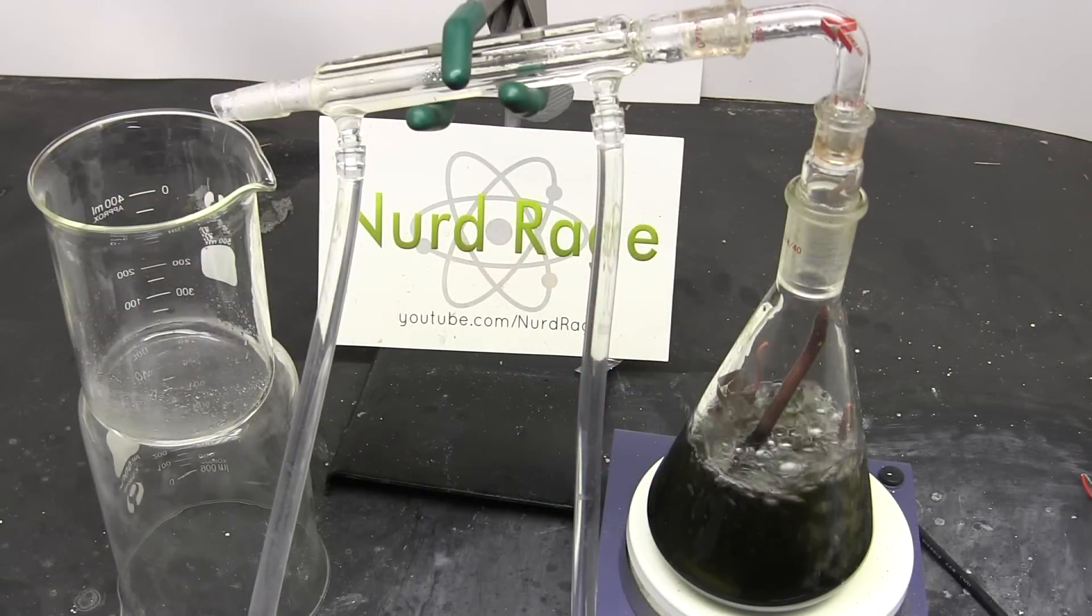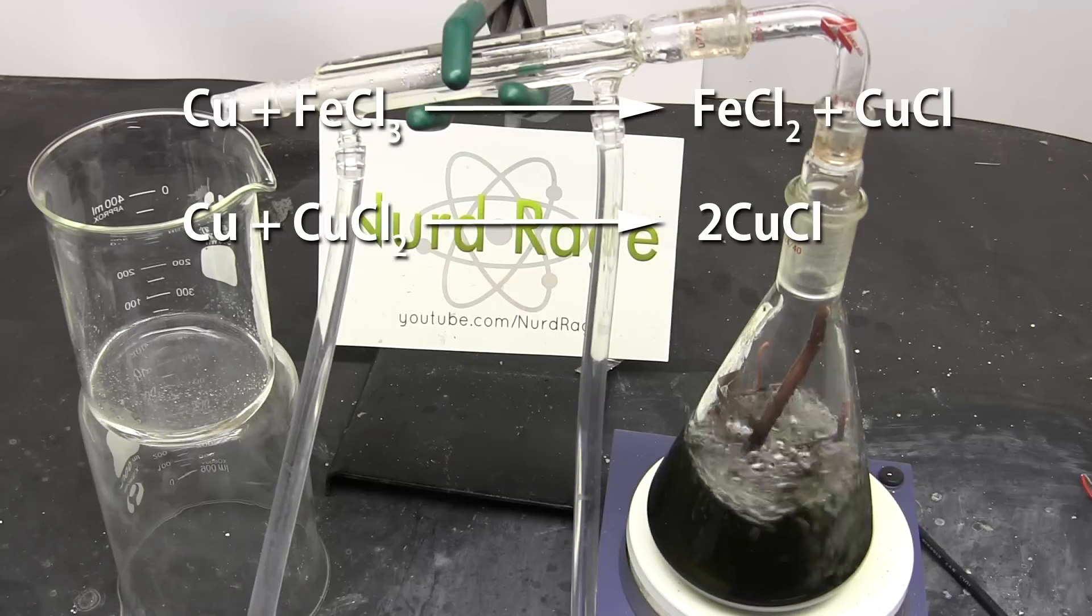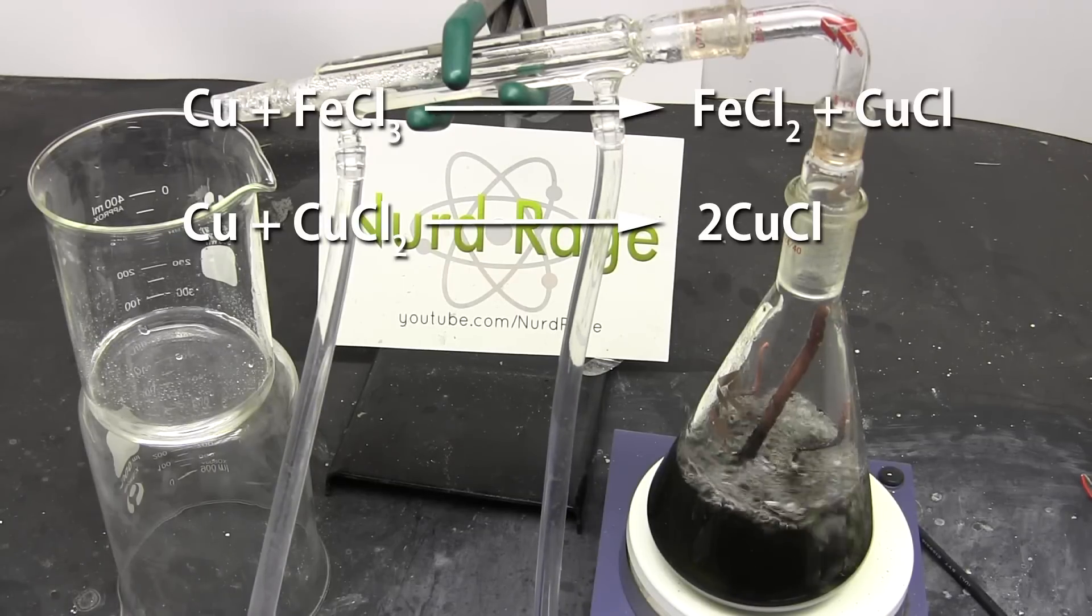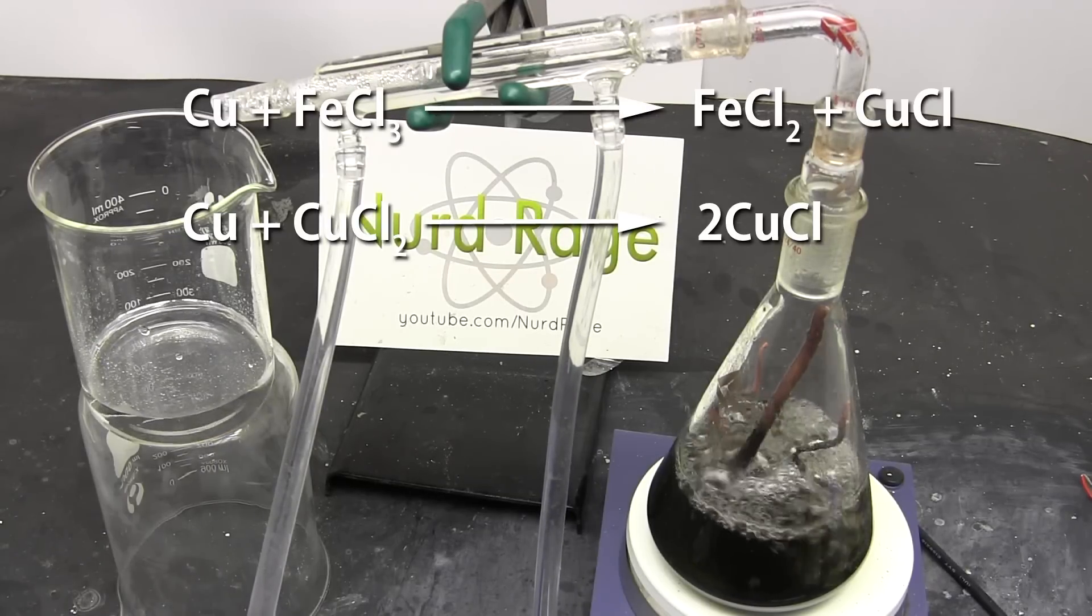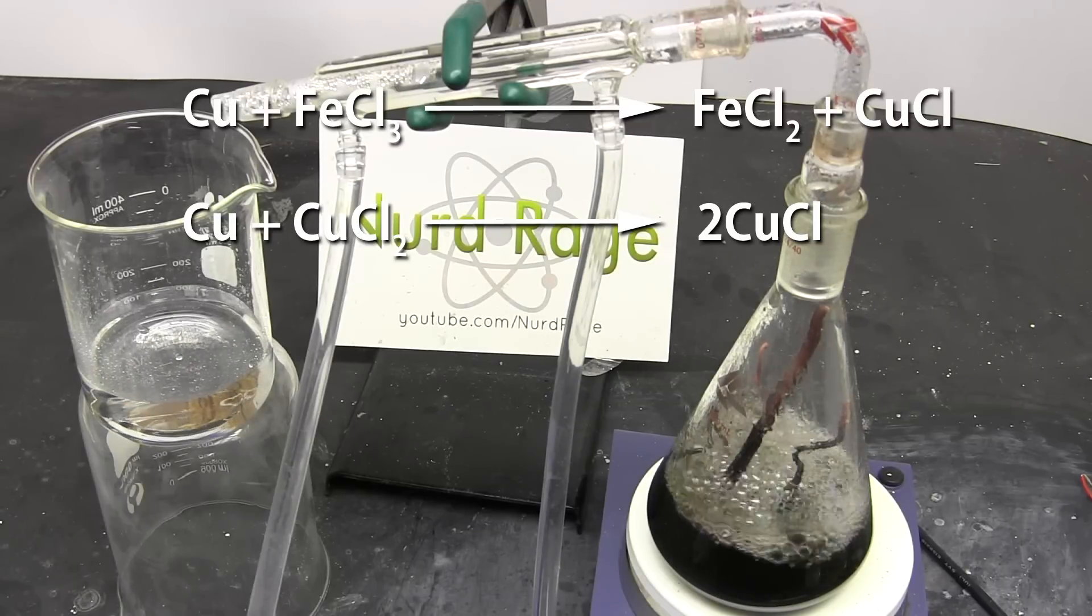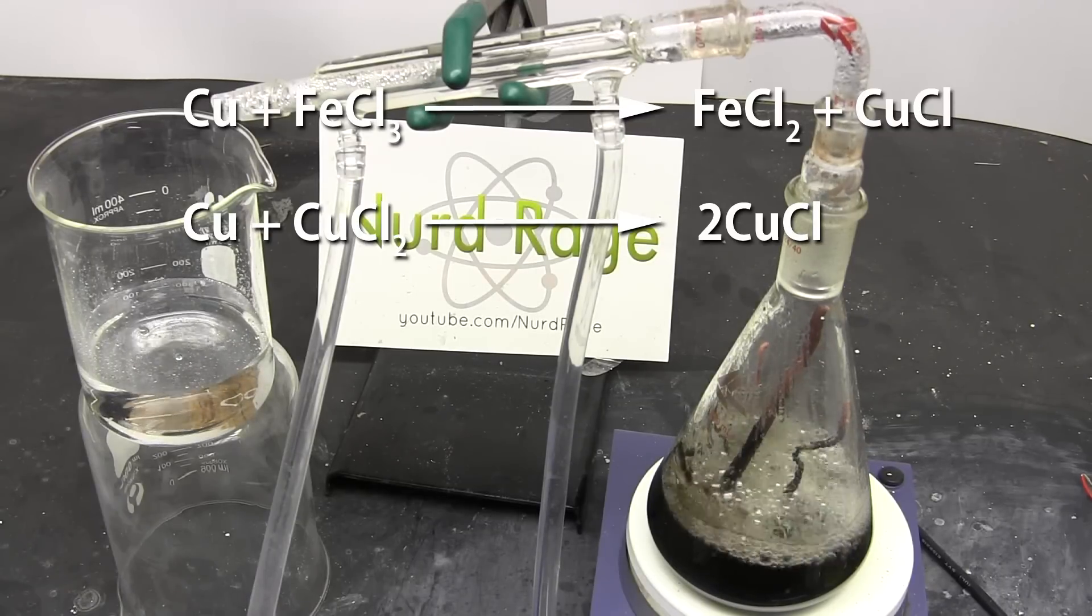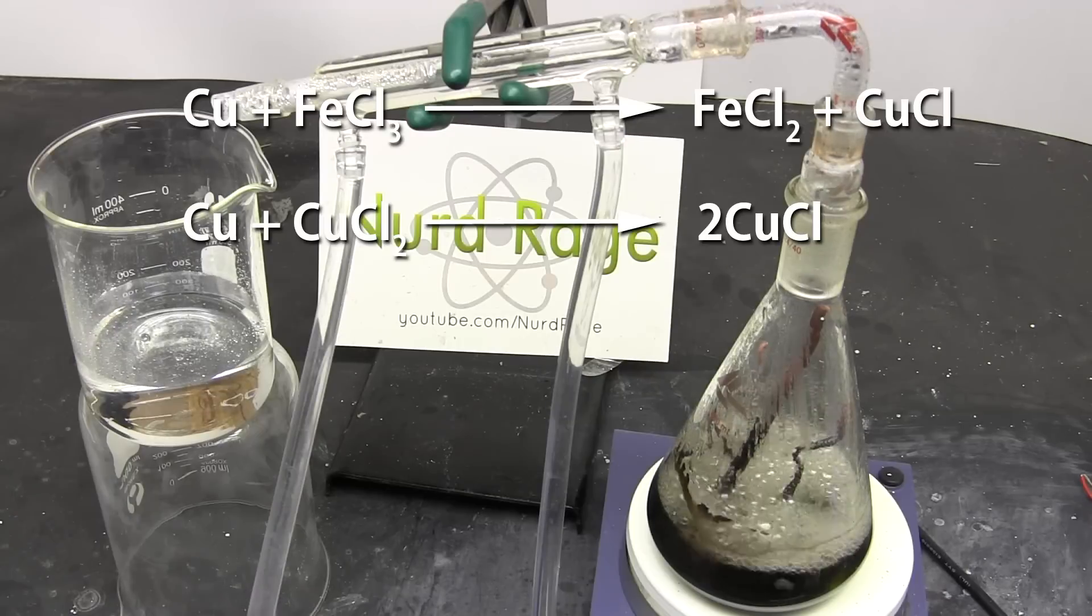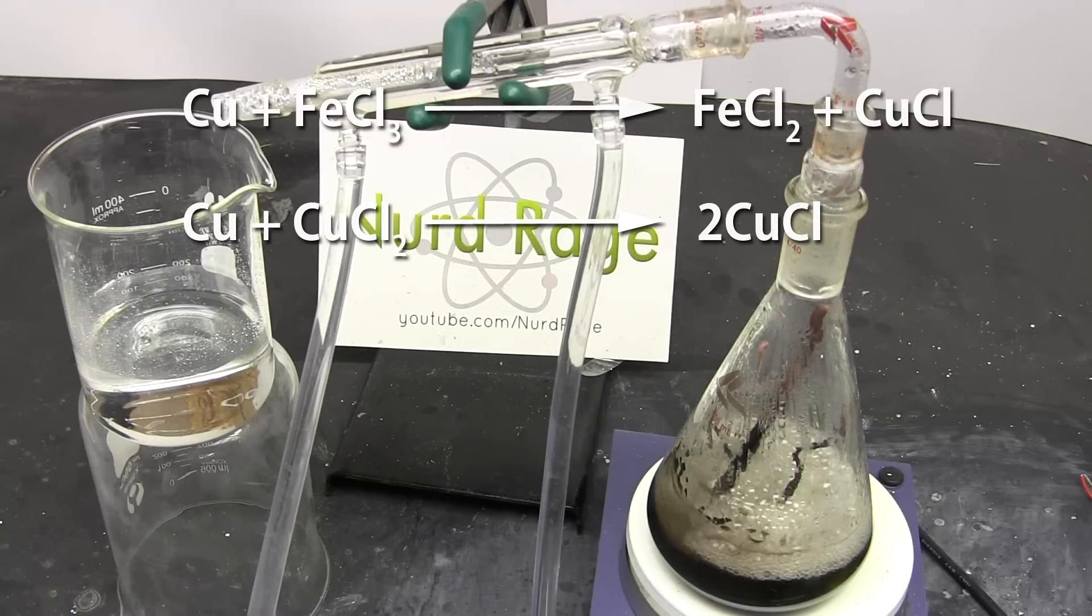Okay now we distill the mixture again but this time the added copper will react with the ferric chloride and copper chlorides to produce ferrous chloride and copper chloride. These are also known as iron 2 chloride and copper 1 chloride. We're doing this because while iron 2 chloride is soluble in water, copper 1 chloride is not and that gives us our means to separate the two.